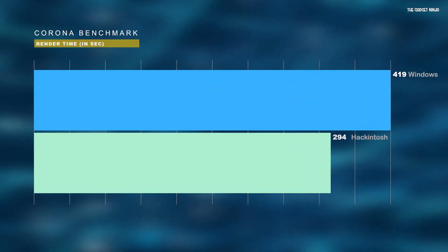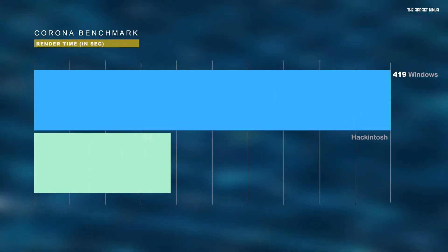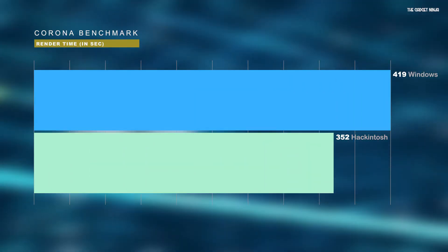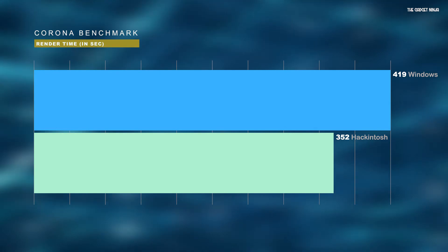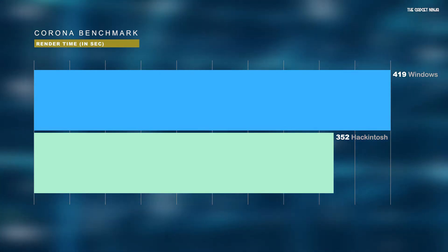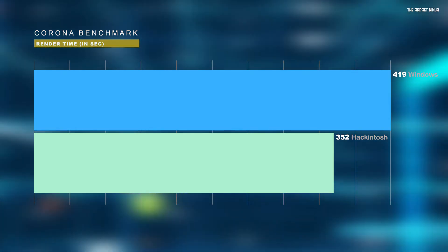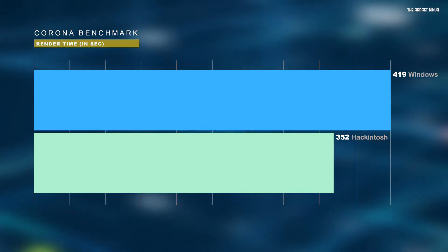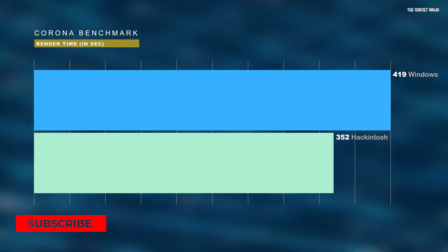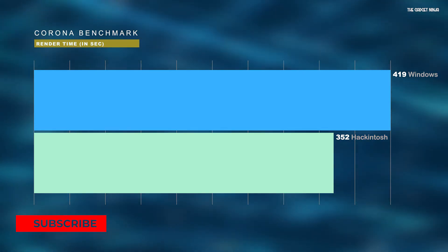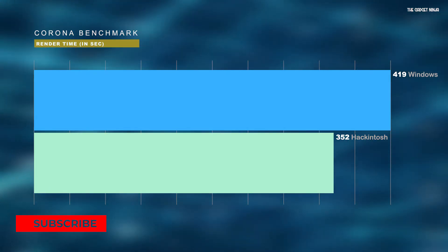Moving to Corona 1.3 — and yes, there's actually a benchmark named Corona. The render time for Windows was 6 minutes and 59 seconds, that's 419 seconds in total, and that of Hackintosh was 5 minutes and 52 seconds, that's 352 seconds in total. So Hackintosh here also won by more than a minute.